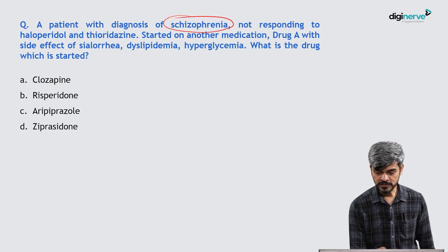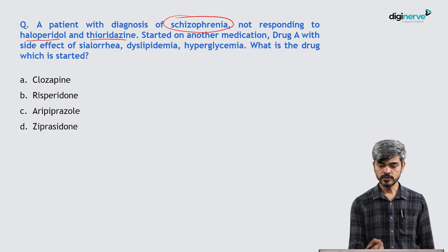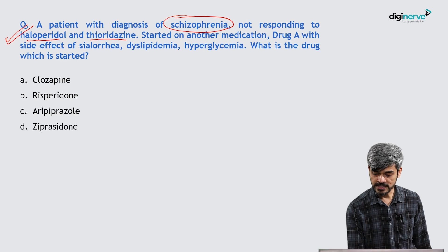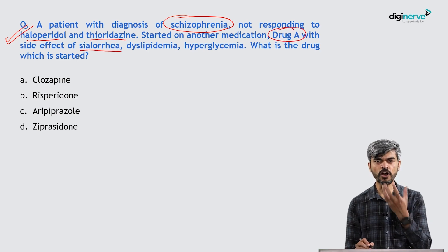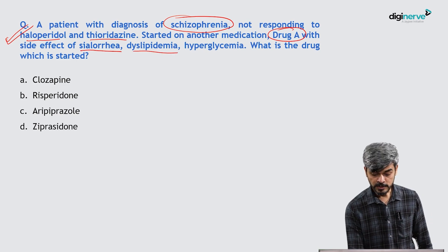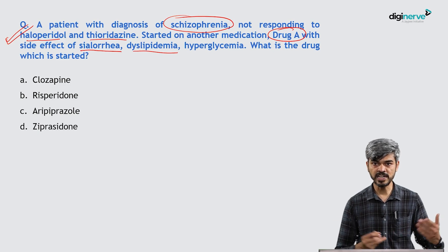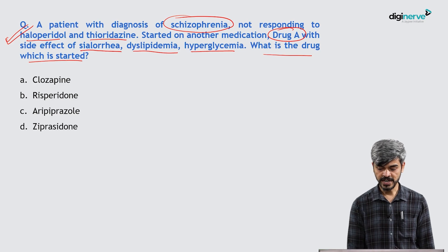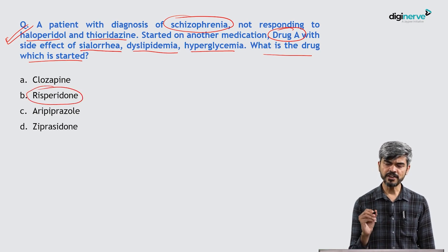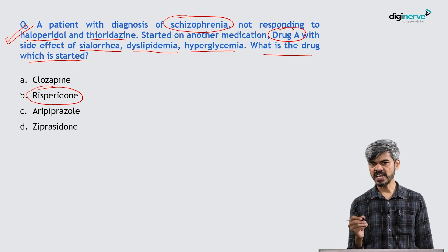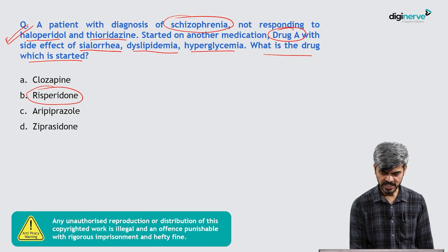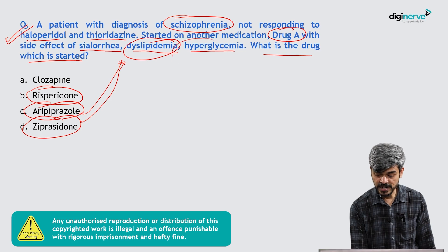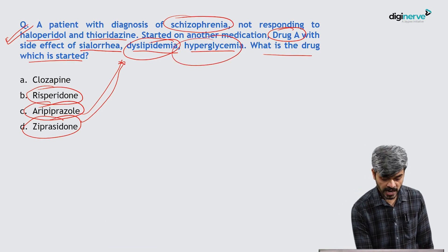A patient with schizophrenia not responding to haloperidol and thioridazine — typical antipsychotics — is started on drug A, which causes sialorrhea (excessive salivation), dyslipidemia, and hyperglycemia. Risperidone can cause dyslipidemia and hyperglycemia with some salivation, but it is not very characteristic. Aripiprazole and ziprasidone have lesser chances of causing these metabolic adverse effects. The answer is clozapine — the gold standard treatment in treatment-resistant schizophrenia (TRS).